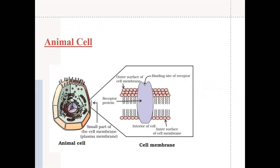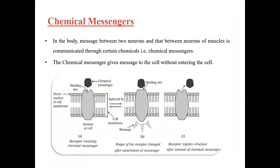When a signal comes — for example through touch — it contacts the cell membrane and the binding site opens in response to that stimulus. This is how sensation is due to the receptor. The receptor has a binding site, just like we have seen the active site in enzymes.